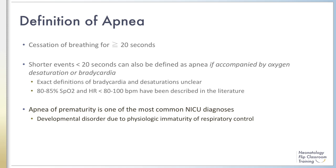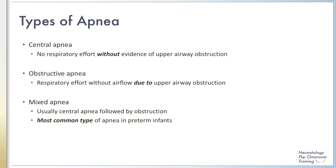Apnea is considered a developmental disorder because it is due to physiologic immaturity of respiratory control and is inversely proportional to gestational age. Apnea is classified into three categories: central, obstructive, and mixed. Central apnea is characterized by the cessation of breathing without any evidence of upper airway obstruction. In obstructive apnea, respiratory effort is noted by chest wall movement, but there is no airflow detected due to an obstruction somewhere in the upper airway.